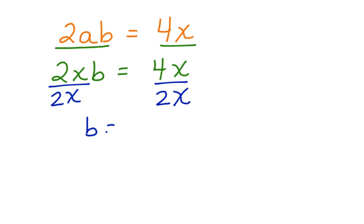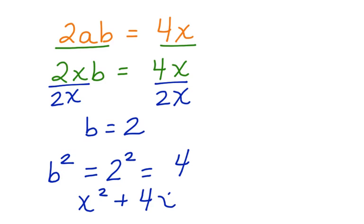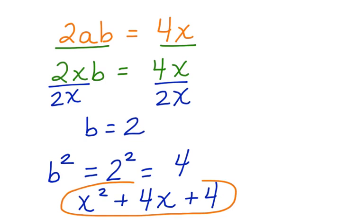And we have b is equal to 2. Now, remember that the last term in a perfect square trinomial is b². So we have to do that here. b² is equal to 2², which is equal to 4. x² + 4x + 4 is the answer to this problem.